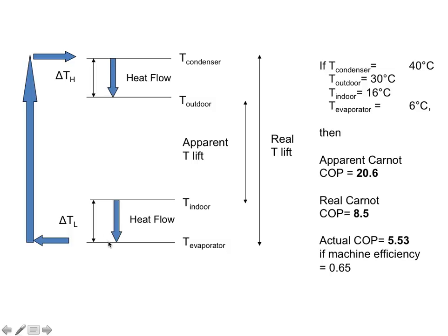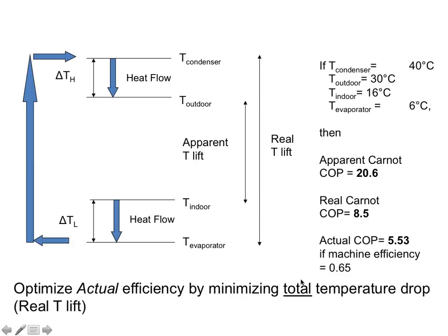If you touch the coils of the air conditioner, it's pretty cold — much colder than the room. And if you were to touch the cooling coils outside, they're much hotter than the outside world. So when you calculate the ideal coefficient of performance using those two temperatures, you get a smaller number. Your actual coefficient of performance is going to be smaller too, because the machine itself is not perfect. What you need to do is minimize this temperature gap by minimizing these two differences in temperature.